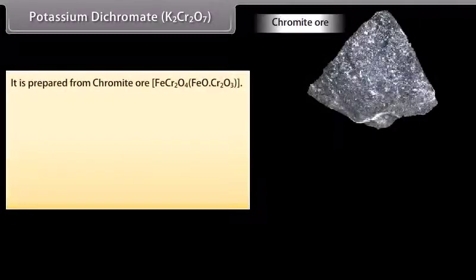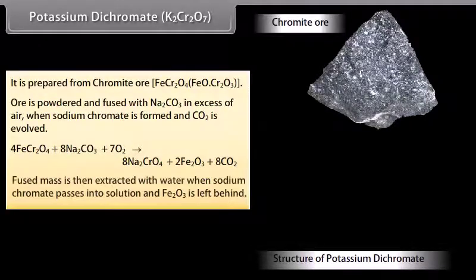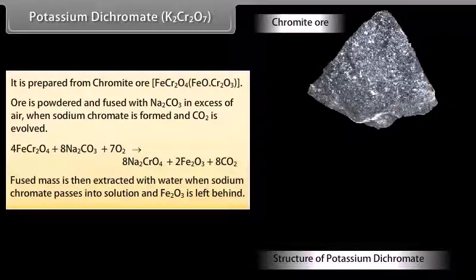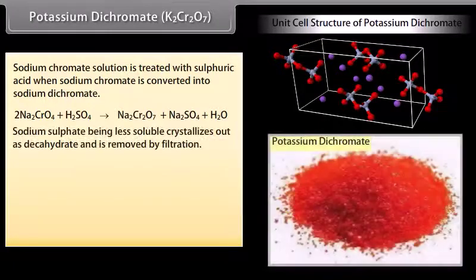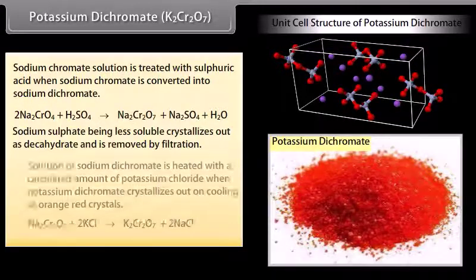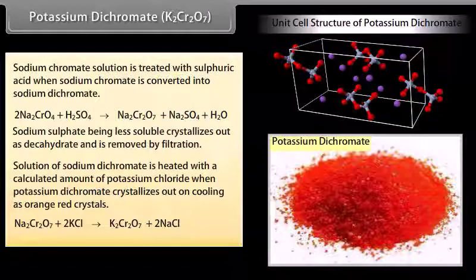Potassium dichromate, K₂Cr₂O₇, is prepared from chromite ore. The ore is powdered and fused with Na₂CO₃ in excess of air, forming sodium chromate with evolution of CO₂. The fused mass is extracted with water; sodium chromate, being soluble, passes into solution while Fe₂O₃ is left behind. Sodium chromate solution is treated with sulfuric acid to convert it to sodium dichromate. Sodium sulfate, being less soluble, crystallizes out as decahydrate and is removed by filtration. The sodium dichromate solution is then heated with potassium chloride, and potassium dichromate crystallizes out on cooling as orange-red crystals.